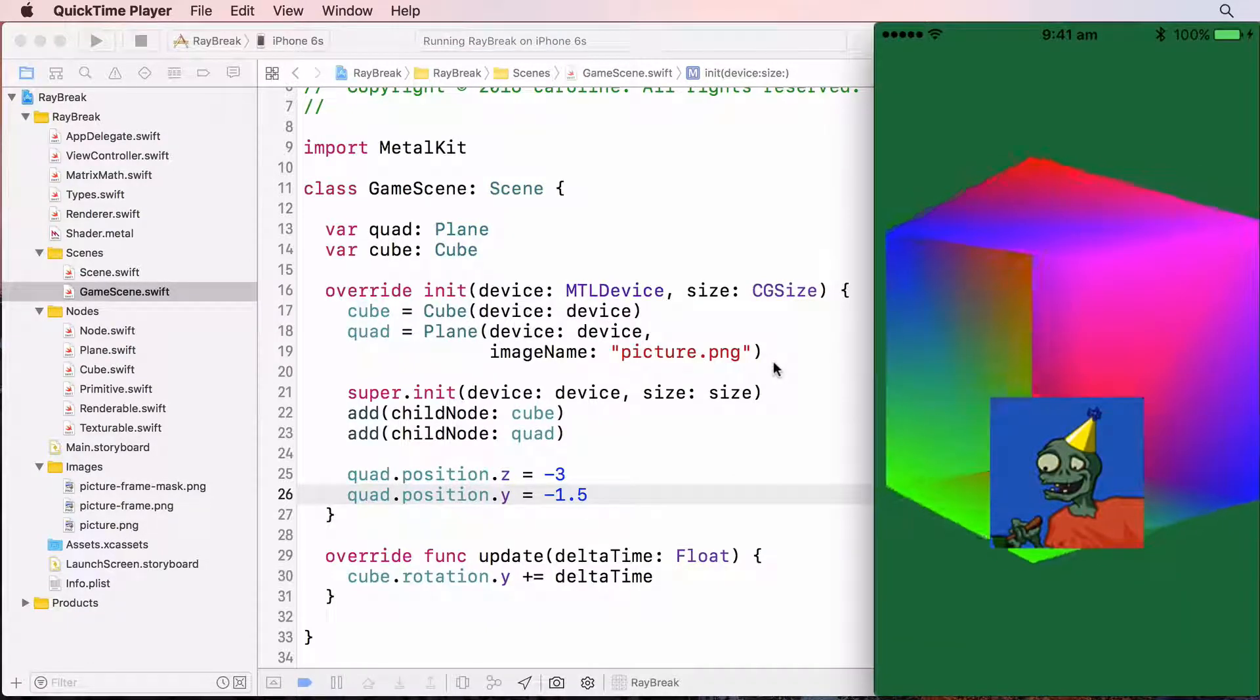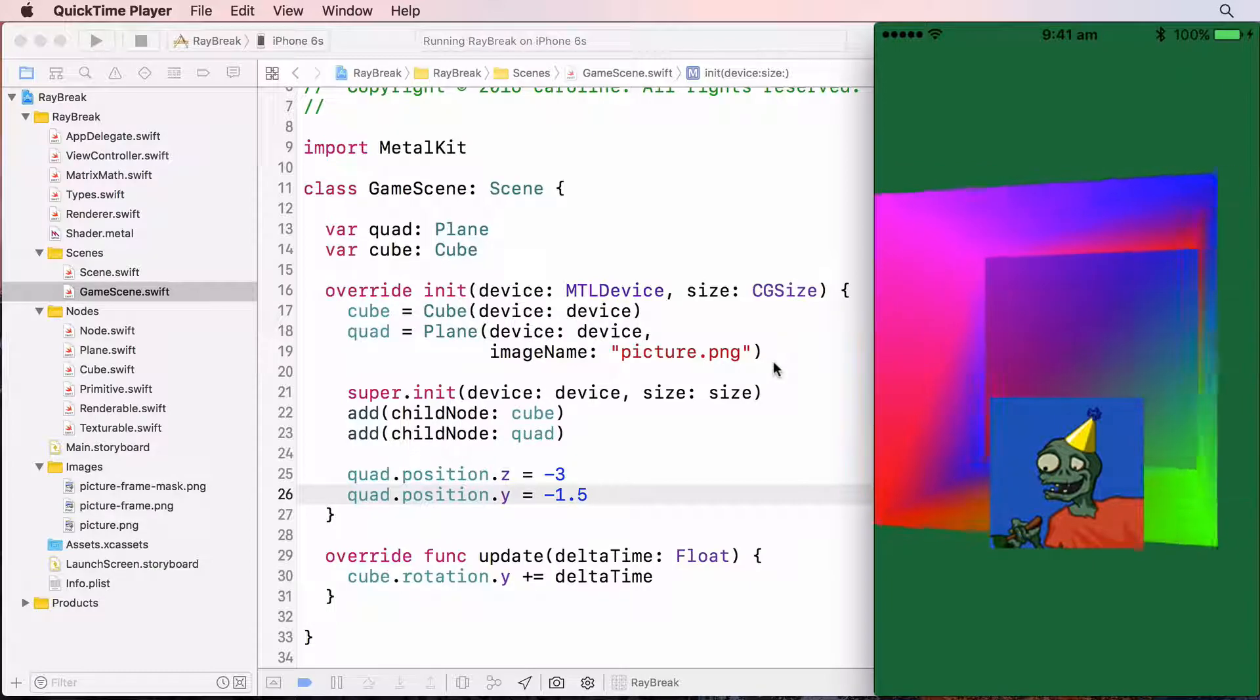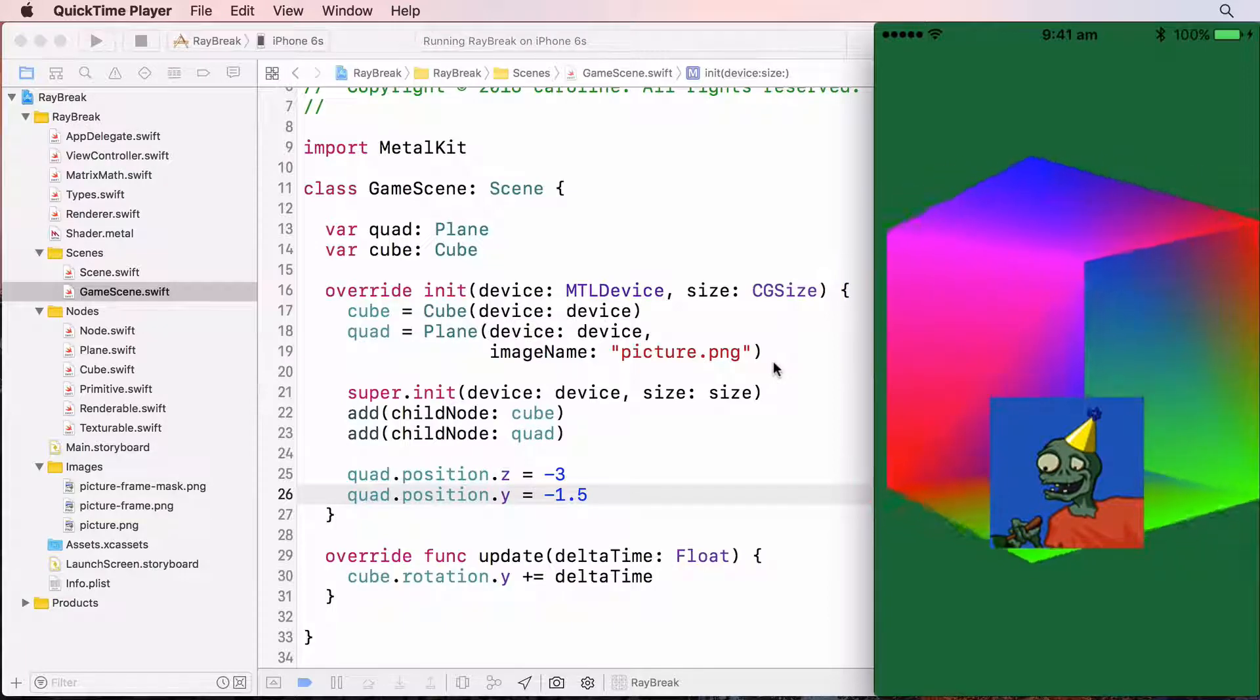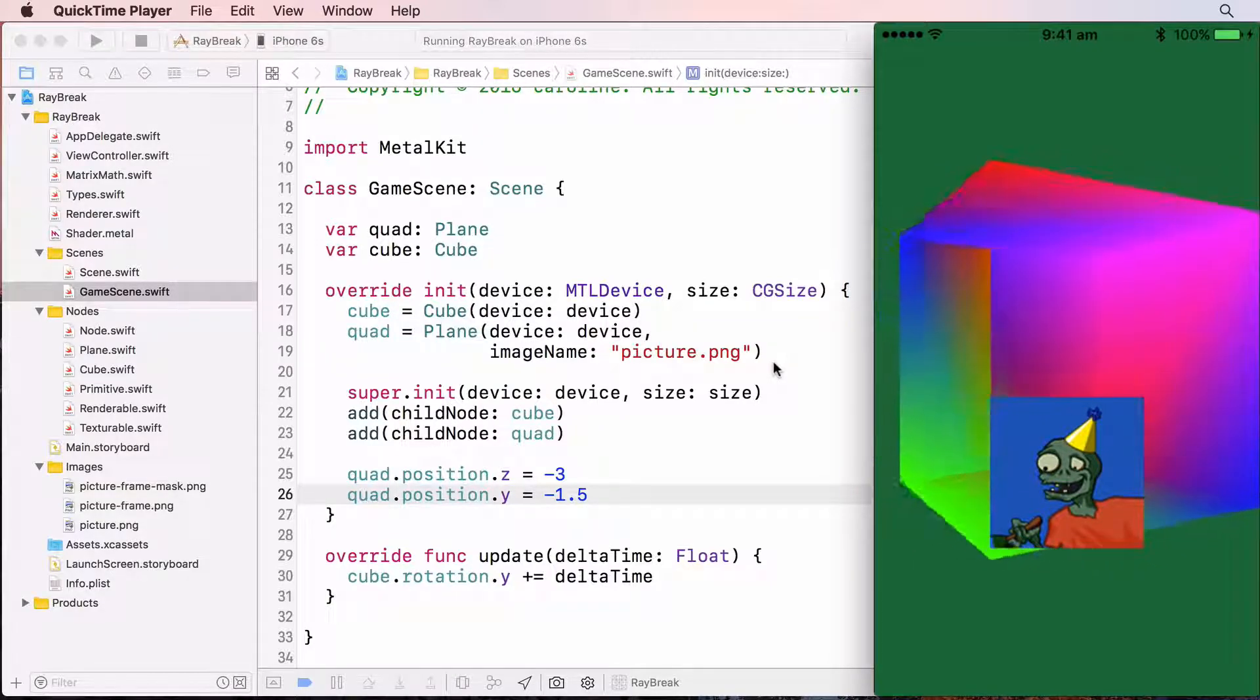And you can see there's something very wrong here. The cube is weirdly transparent in places and even though I sent the zombie to the back by setting its Z position to minus 3, it's still appearing in front of the cube. Currently we're showing the back faces of the cube. And there's also no depth to the scene.